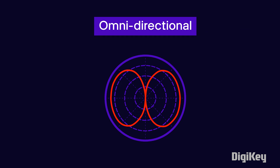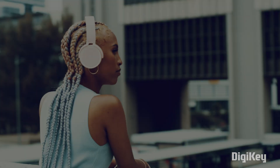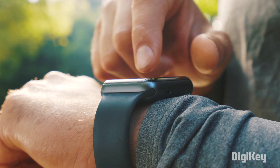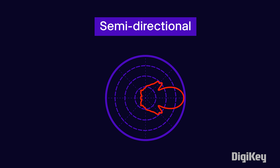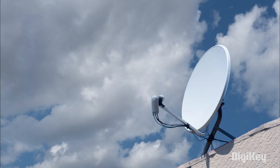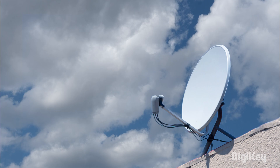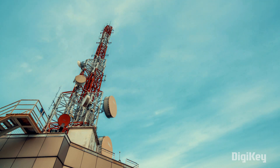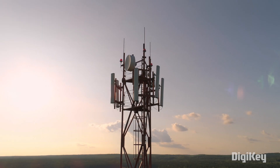Omni-directional antennas generate waves in a circular area and are most commonly found in consumer devices. These have the lowest signal range. Semi-directional antennas generate waves in a specific direction for better signal range. Directional antennas have less angular coverage than semi-directional, are best in line-of-sight applications, and have the largest signal range.